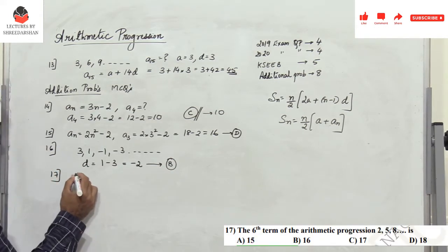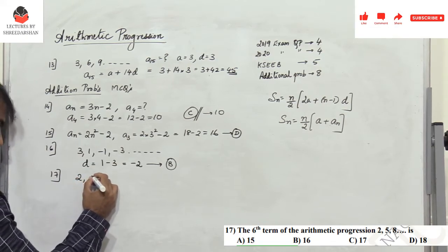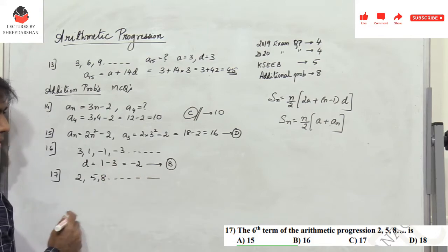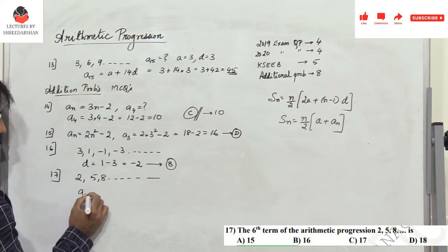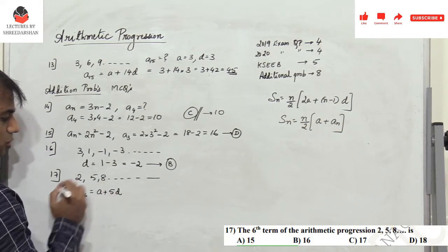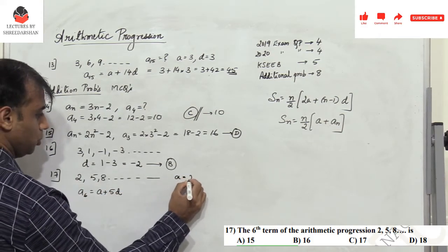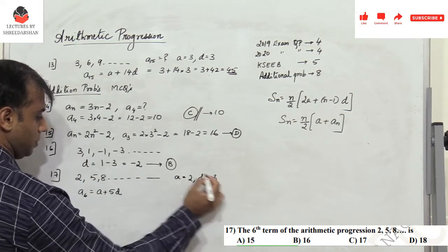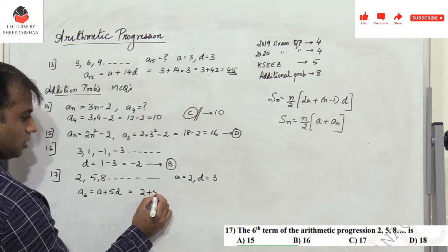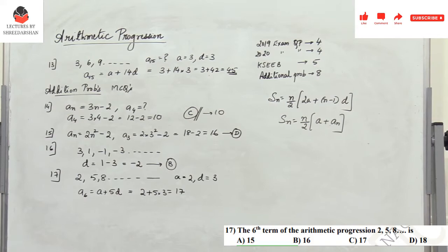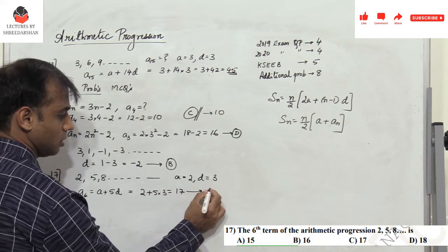Problem 17: find the sixth term of the arithmetic progression 2, 5, 8, ... a₆ = a + 5d = 2 + 5×3 = 2 + 15 = 17. The value 17 corresponds to option C.